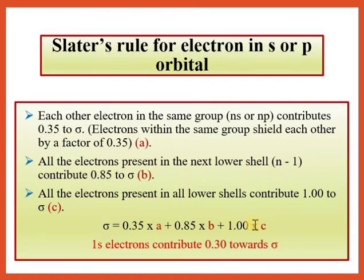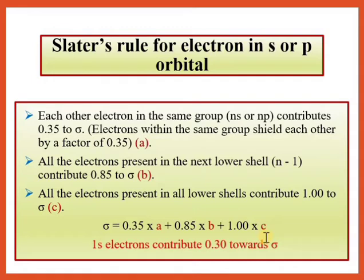Once we know sigma, we can easily calculate Z_effective. Note: for 1s electrons, the other 1s electron contributes 0.30 (not 0.35). Also, electrons in orbitals outside the electron of interest do not count, because outer-shell electrons do not show a screening effect — only inner-shell electrons show the screening effect.